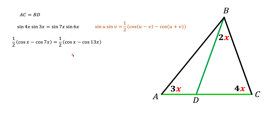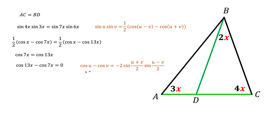After all the cancellations, we get the simple expression: cosine of 7x equals cosine of 13x. Moving everything to one side gives us a difference of cosines equal to zero. We apply the difference-of-cosines formula in reverse, with u equal to 13x and v equal to 7x, and we obtain that sin of 10x times sin of 3x equals zero.